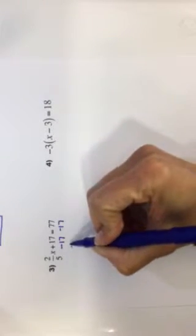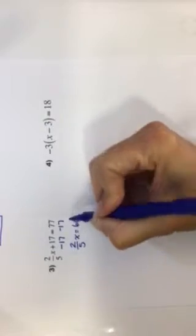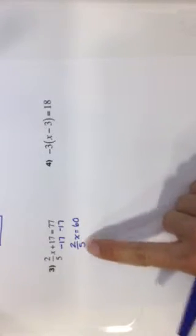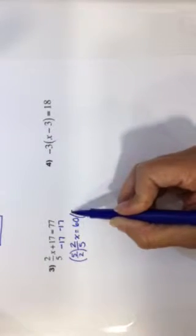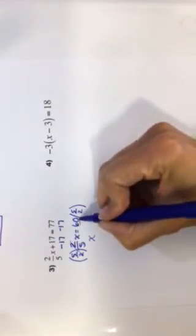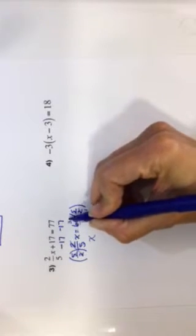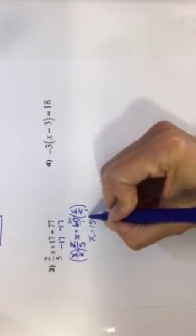Undo my addition or subtraction first. So the opposite of adding 17 would be subtracting. That would leave me with 2 fifths x equals 60. The opposite of multiplying is dividing, but we don't really divide fractions. We multiply by the inverse and the reciprocal. So I'm going to multiply both sides by the reciprocal or the inverse of that fraction. These cancel and isolate x. They really make 1x. And then I'm going to cross-cancel here. 2 goes into 2 once. 2 goes into 60, 30 times. 30 times 5 is 150.